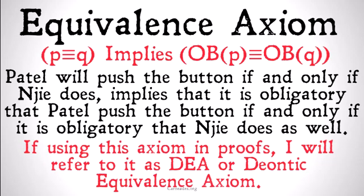If using this axiom in proofs, I'm going to refer to it as the DEA, or Deontic Equivalence Axiom. Once more, the axiom states that if we have P is equivalent to Q, we can conclude from that: it's obligatory that P is equivalent to it's obligatory that Q.